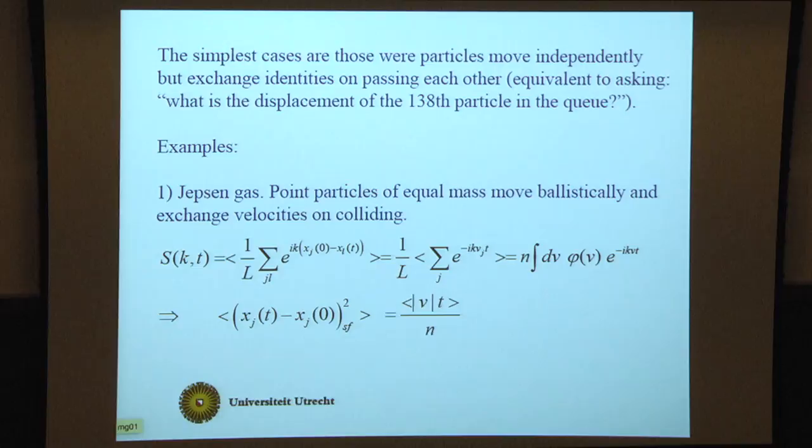Examples: First, the Jepsen gas, so point particles of equal mass moving ballistically and exchanging velocity on colliding. You have ideal gas particles just moving at constant speed and a tagged particle dancing between its neighbors.